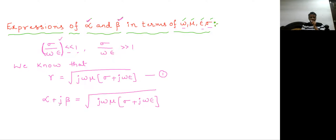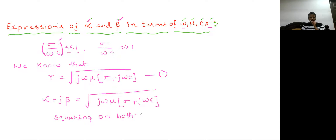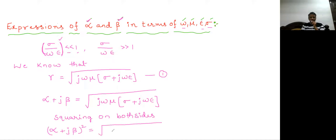Since there is an imaginary term inside a square root, we need to remove that square root. For that we take squaring on both sides, so (alpha plus j beta) whole square equals j omega mu into (sigma plus j omega epsilon).